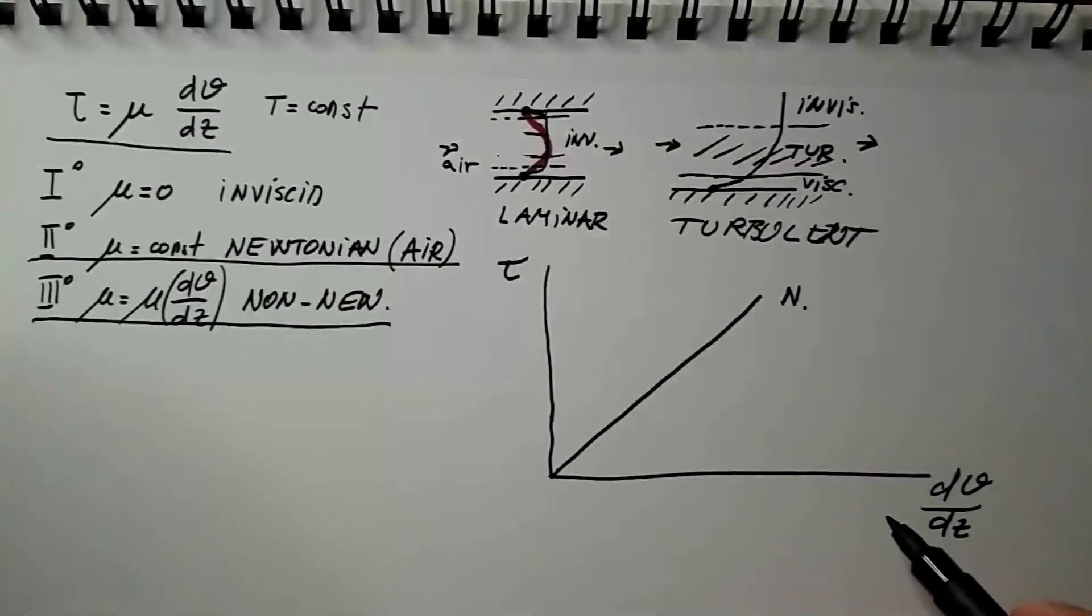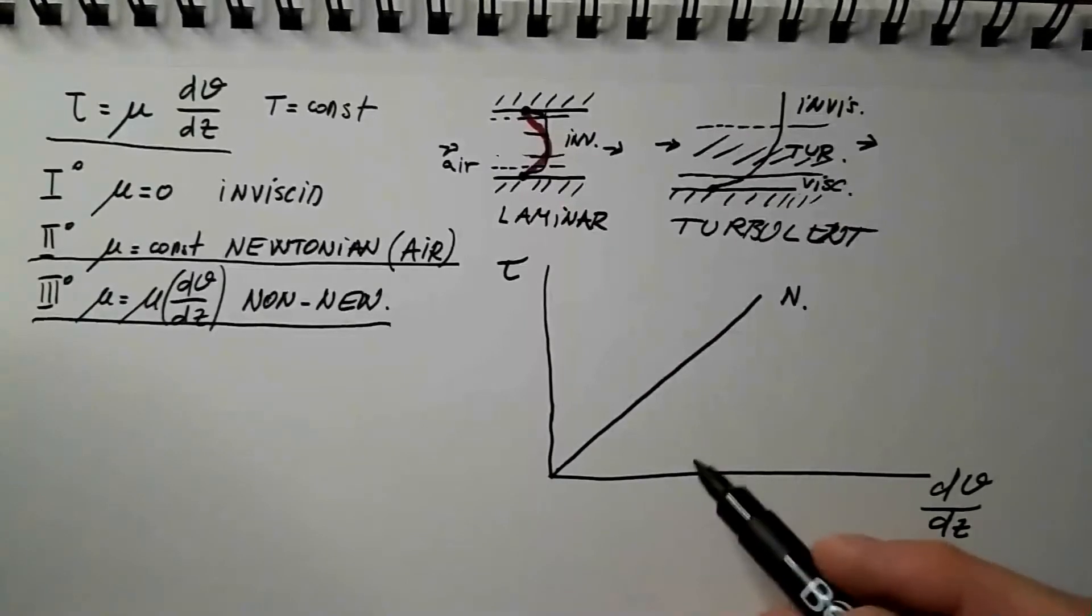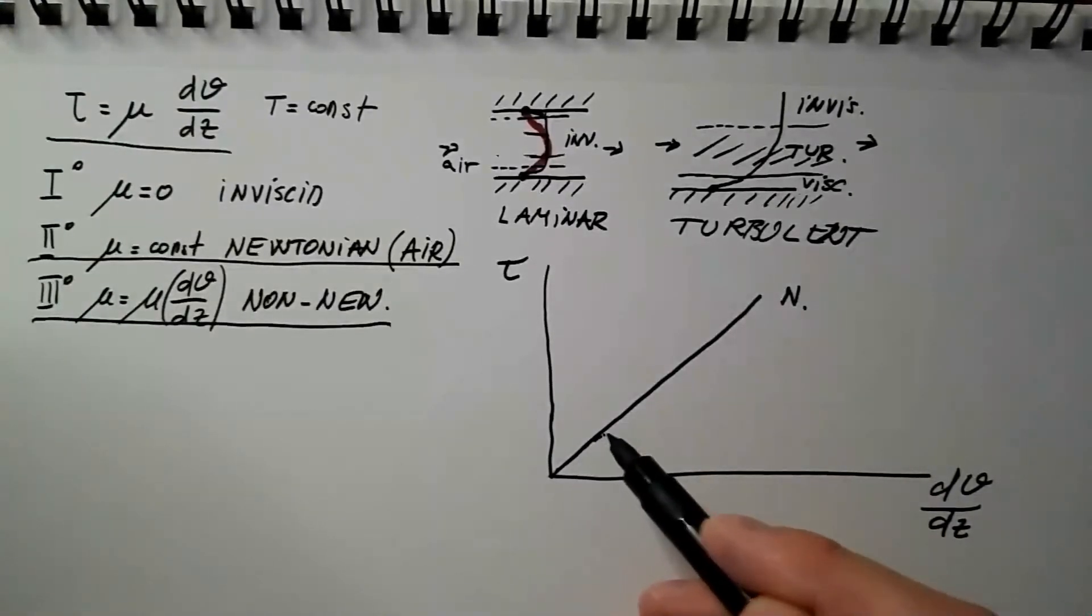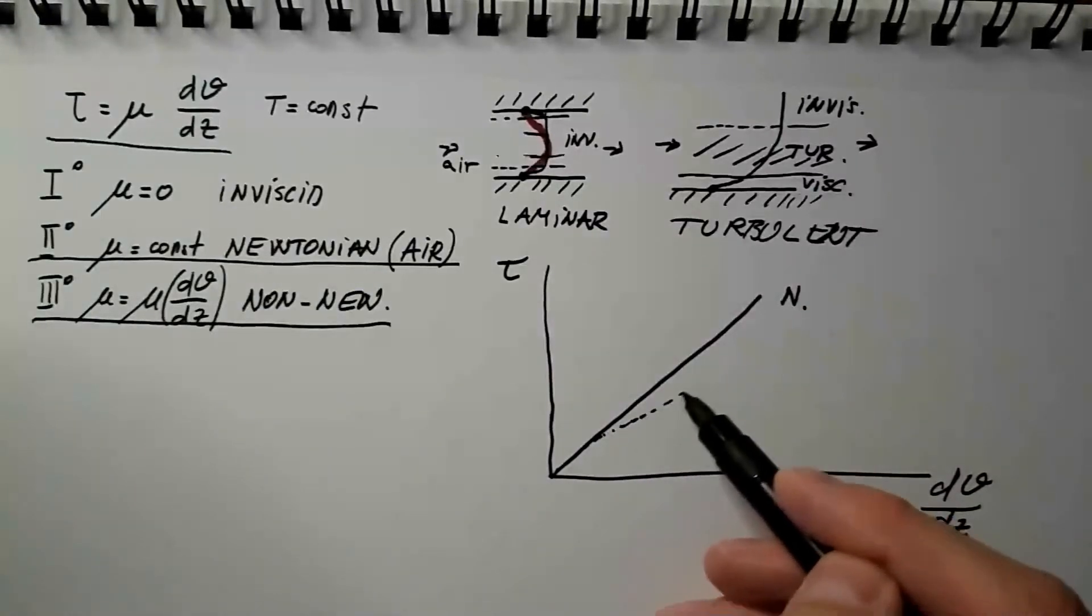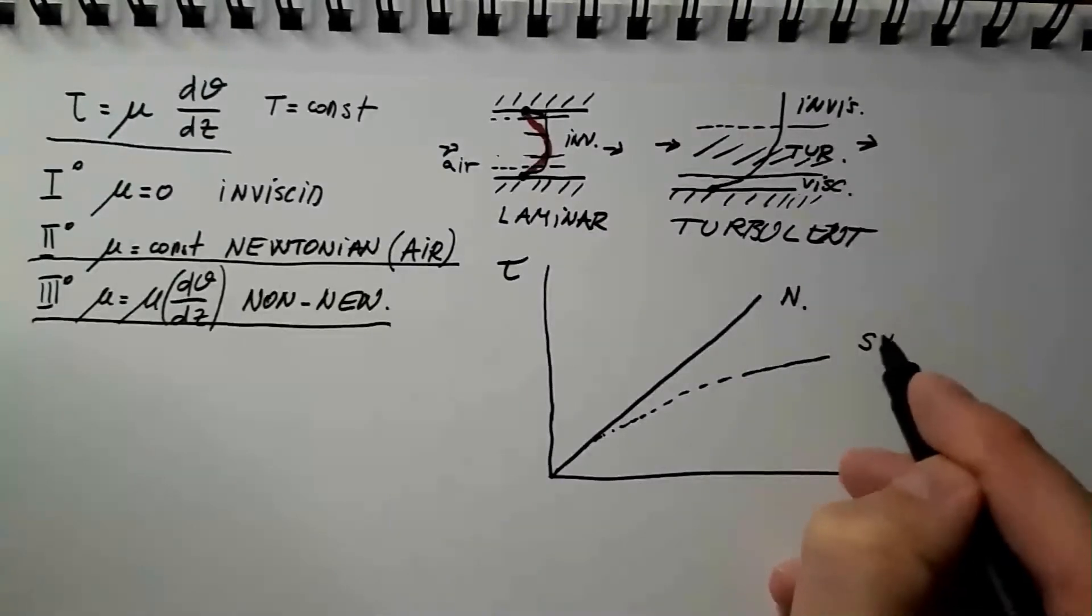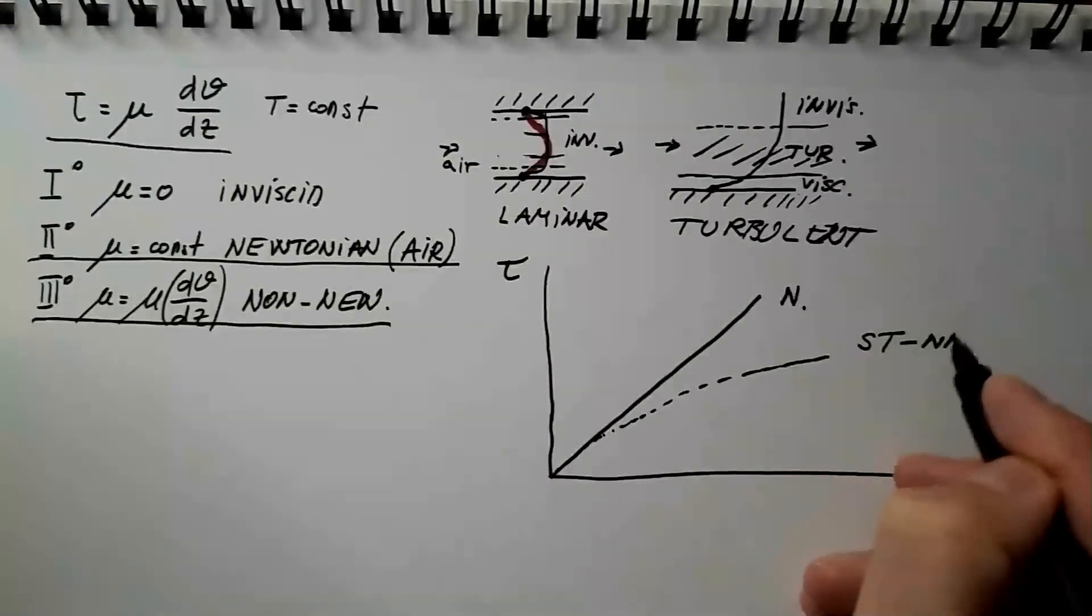Now, non-Newtonian fluids come in two, or rather three classes. You'll see what I mean by that. The first class is so-called shear thinning non-Newtonian fluids, and they look something like this. So, these are shear thinning non-Newtonian fluids.